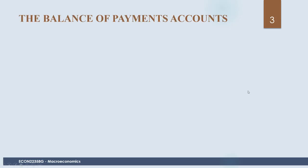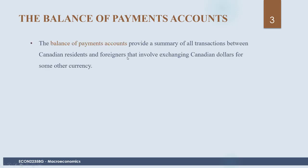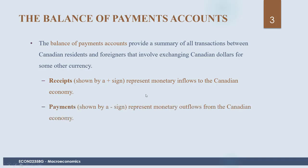The first topic in this chapter is the balance of payments accounts. The balance of payments accounts provides a summary of all transactions between Canadian residents and foreigners that involve exchanging Canadian dollars for some other currency — essentially keeping track of all transactions Canada has with the rest of the world. A receipt is shown by a positive sign and represents a monetary inflow; payments show a negative sign and represent monetary outflows.